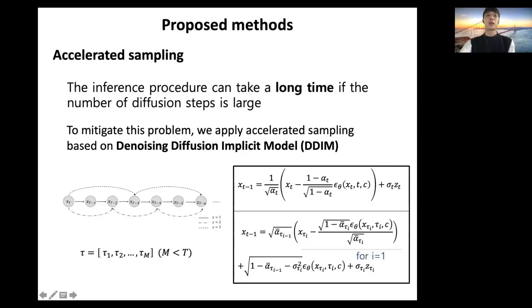The diffusion model has a critical disadvantage that the inference speed is too slow. To mitigate this problem, we apply accelerated sampling based on DDIM.